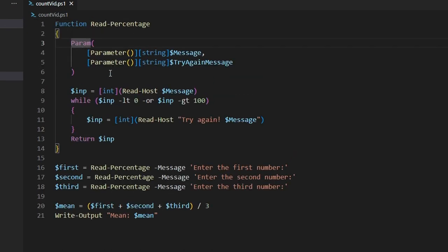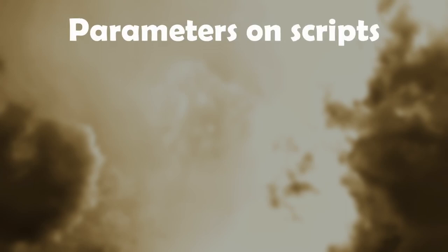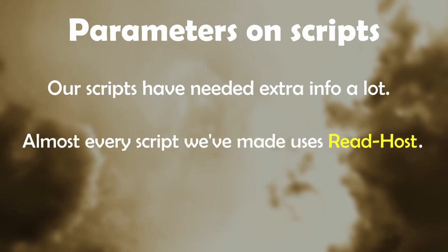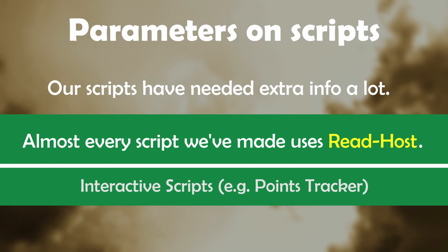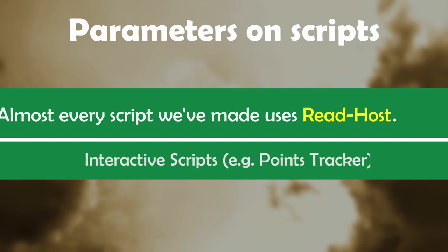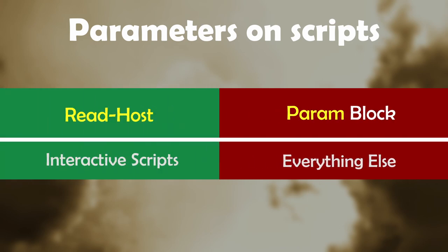We can make our scripts take in parameters by putting a param block at the top of them. Before I show you how all that works, I want to start by explaining why you'd even want to do such a thing. Almost every single script we've made in this series so far has needed extra info from the user, and every time we've taken in extra input, we've used Read-Host to get it. That is a perfectly valid way for taking in data, especially for very interactive scripts, but for scripts that aren't quite so interactive, if you can make them without using Read-Host, you should. You should prefer using a param block to make your script take in actual parameters, as opposed to using Read-Host.